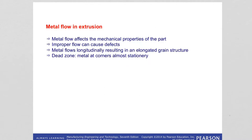The metal flow pattern in extrusion is very important because it influences the quality and final properties of the product. The material flows longitudinally, so extruded products have an elongated grain structure. Improper metal flow can produce defects. One way to investigate the flow pattern is to cut the billet lengthwise in half, mark one face with a square grid pattern, reassemble the halves, extrude, and then analyze the resulting flow pattern.